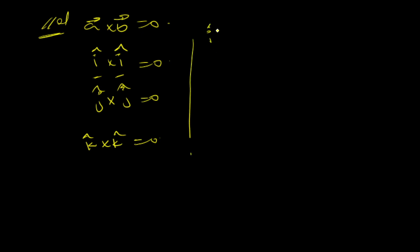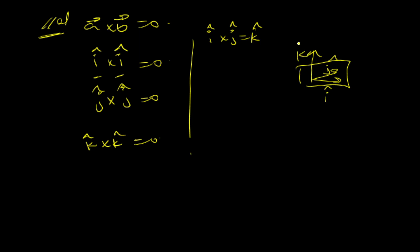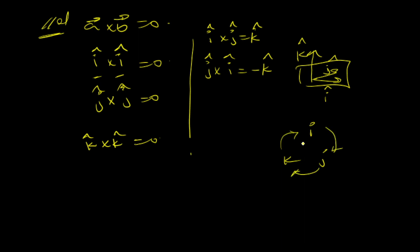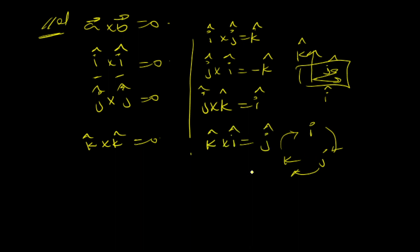Now, i-cap cross j-cap equals k-cap, because if a plane contains two vectors, the vector product is perpendicular to that plane — so if i-cap and j-cap are in the plane, the perpendicular vector is k-cap. And j-cap cross i-cap equals minus k-cap. This is the cyclic form: cross product of i and j gives k, cross product of j and k gives i.